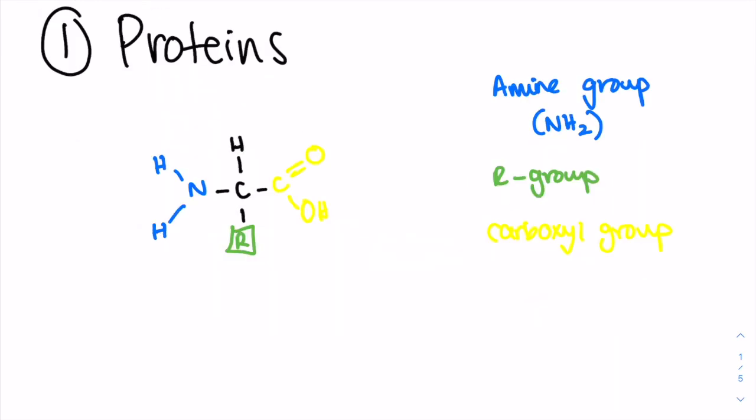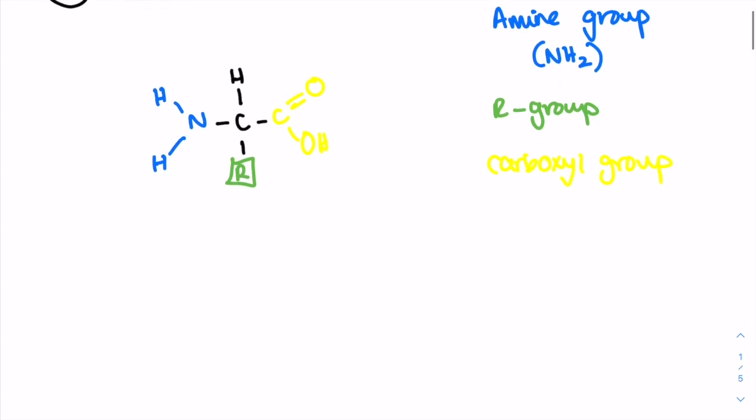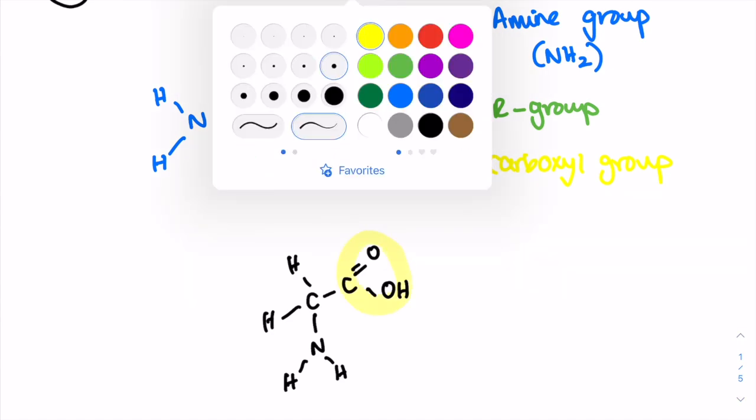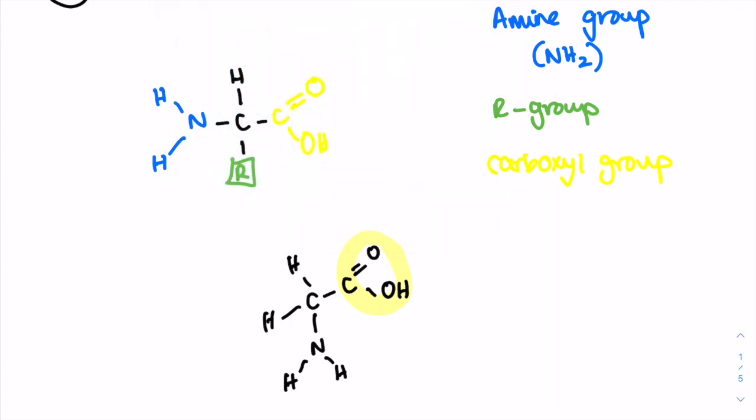So a top tip is that the IB likes to change the orientation of the molecule of the amino acid or represent it in a different way, just to confuse us in the exam. So, for example, this would also be an amino acid. This would be the carboxyl group. The NH2 would be the amine group. And then the R group would just be one of these hydrogens. So it's important to look for these two main indicators, as well as an R group indicator to determine whether a molecule that they show you is an amino acid or not.